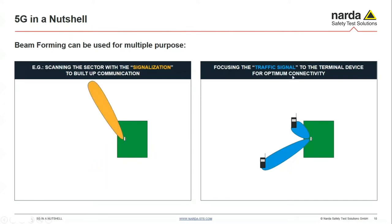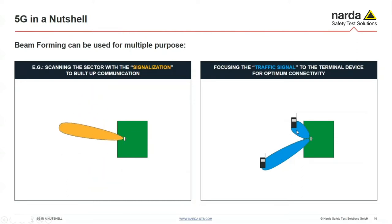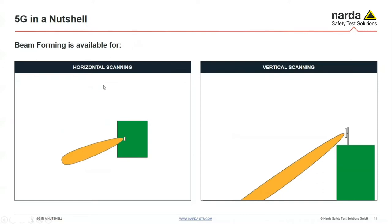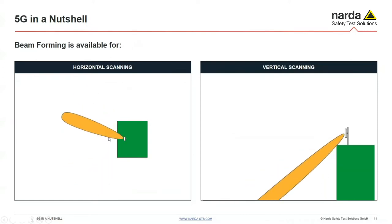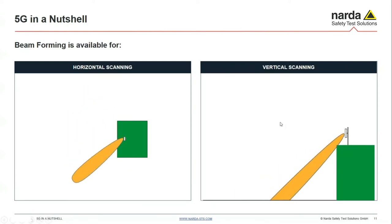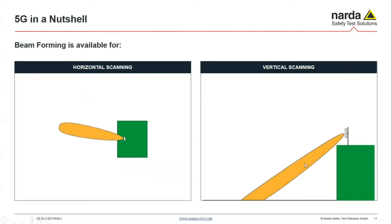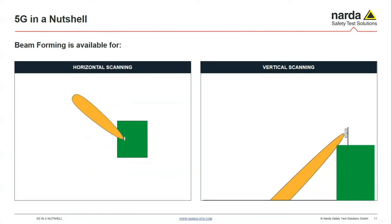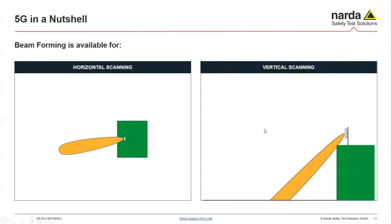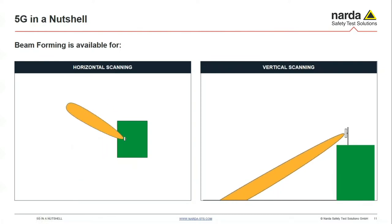At the same time, you can have fixed traffic signal beams — shown in blue — giving the user equipment the uplink and downlink for optimum connectivity. So there are two different beamformings to keep in mind. There is horizontal scanning, looking from the top on the tower or rooftop, and vertical scanning, looking at the building on the right. We have beamforming in two directions — in two dimensions.